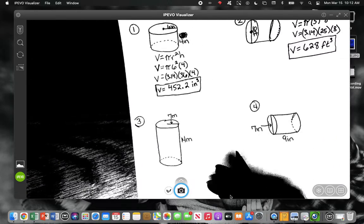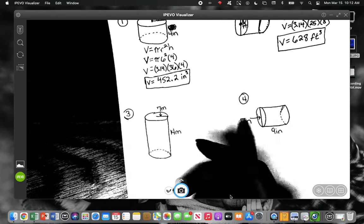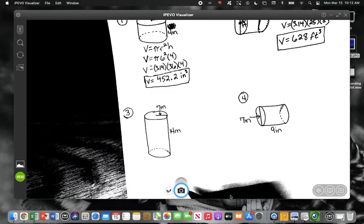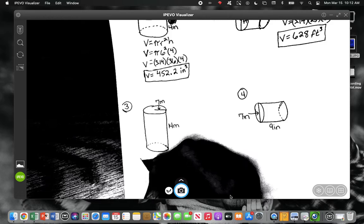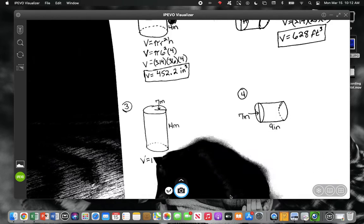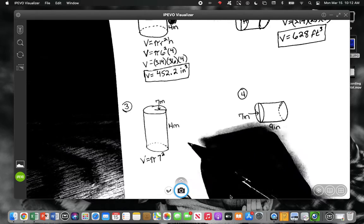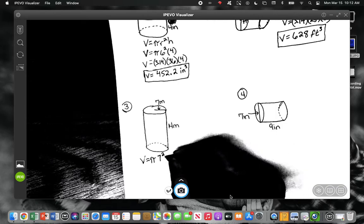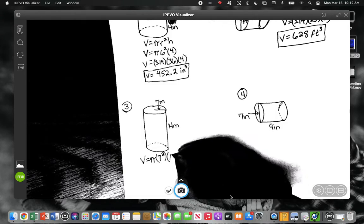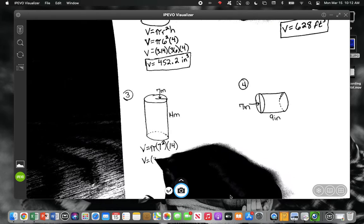Alright, so let's look at number 3. So what is our radius in this one? 7. Alright, so we need to do, we need to have π times 7 squared times what? 14. 14 is our height, right?